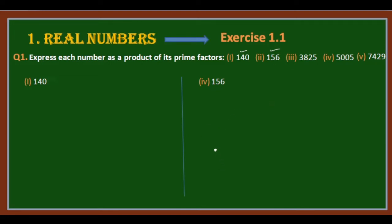This is the first exercise of real numbers. Question number 1: express each number as a product of its prime factors. Here we can express each number as a product of its prime factors.